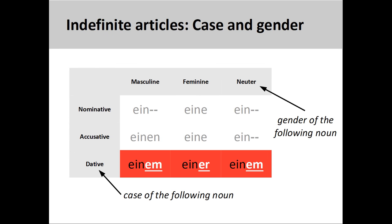The endings for possessive adjectives are the same as those found on indefinite articles. These endings indicate the case and gender of the noun that follows. For example, the dative masculine ending is -em, the dative feminine ending is -er, and the dative neuter ending is -em. Note that the dative masculine and neuter endings look the same.